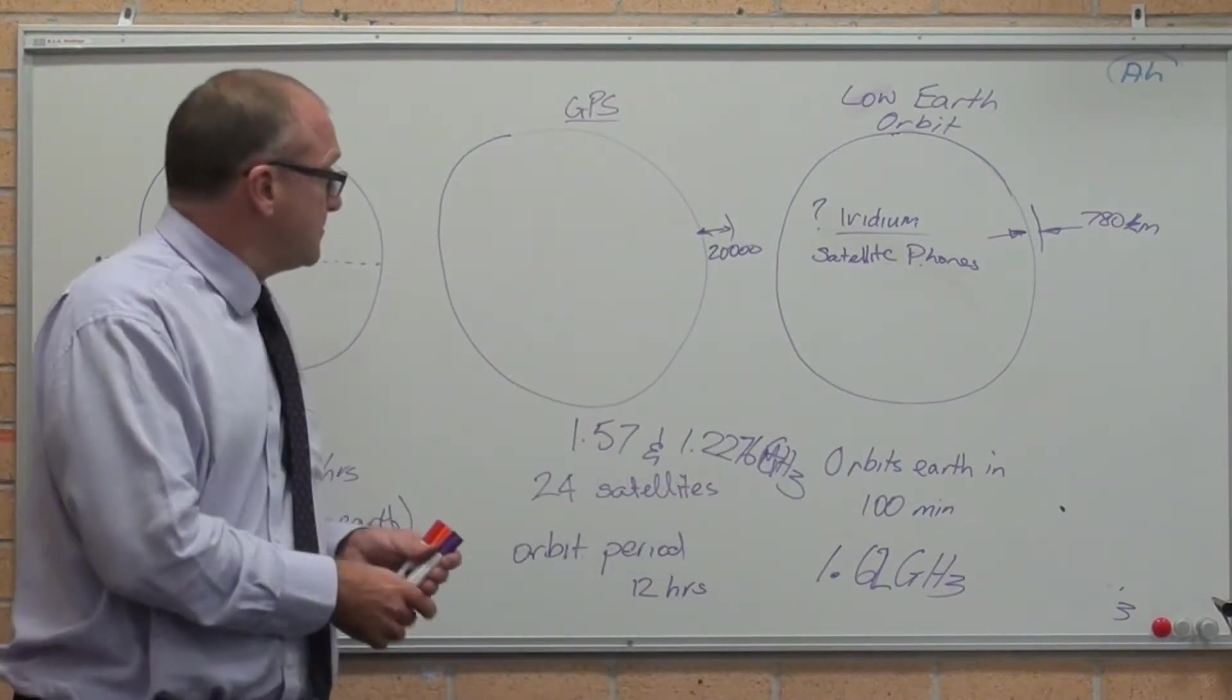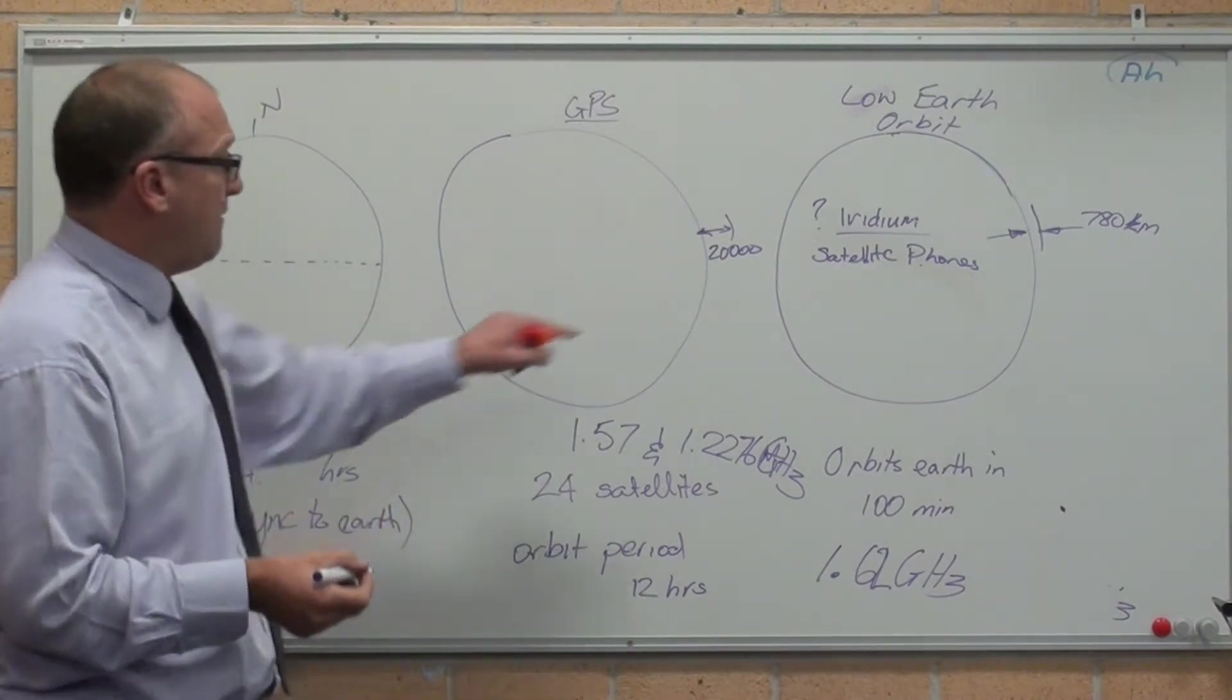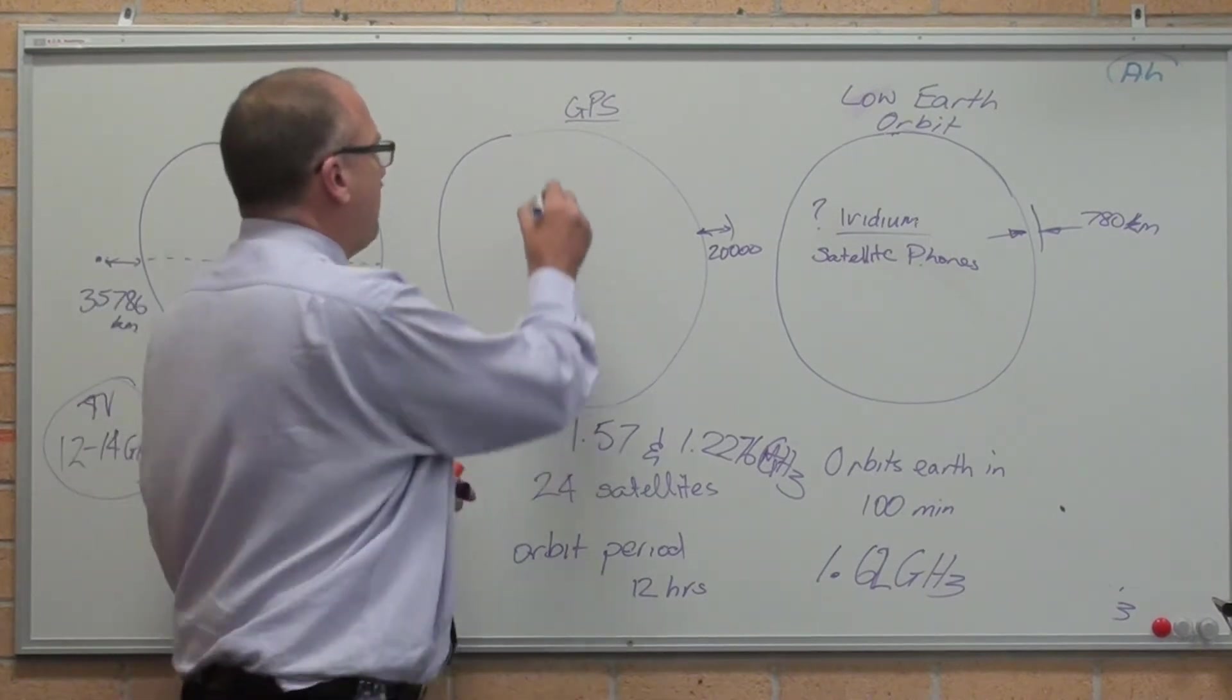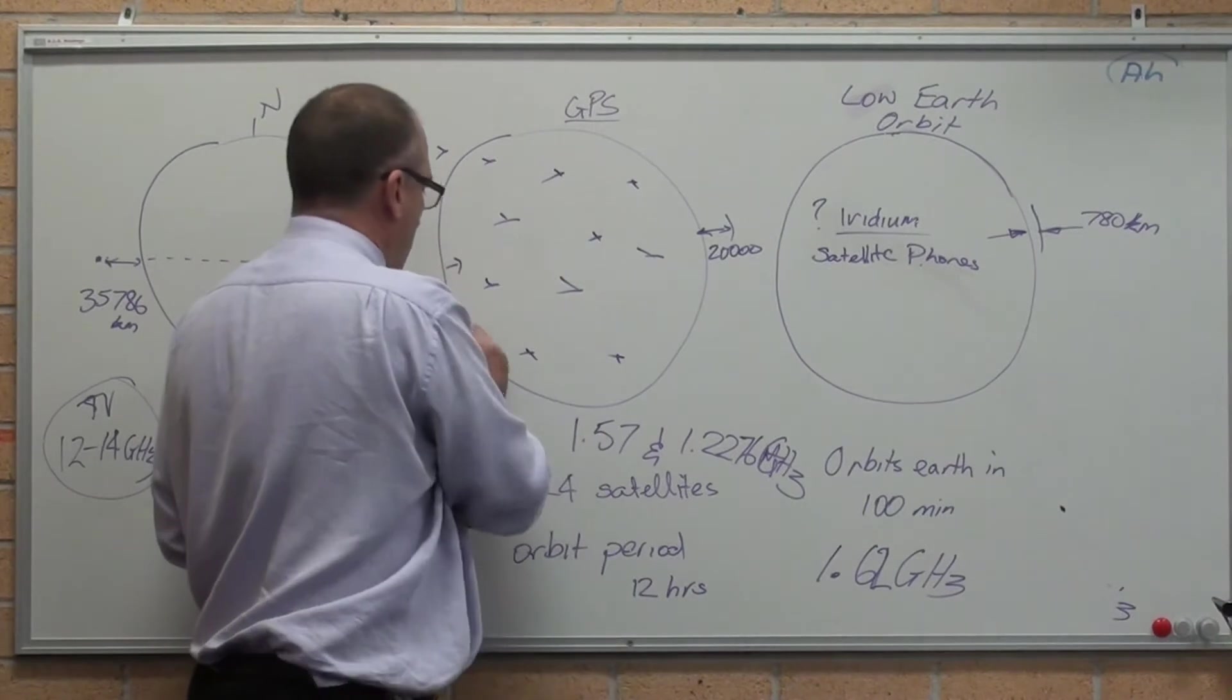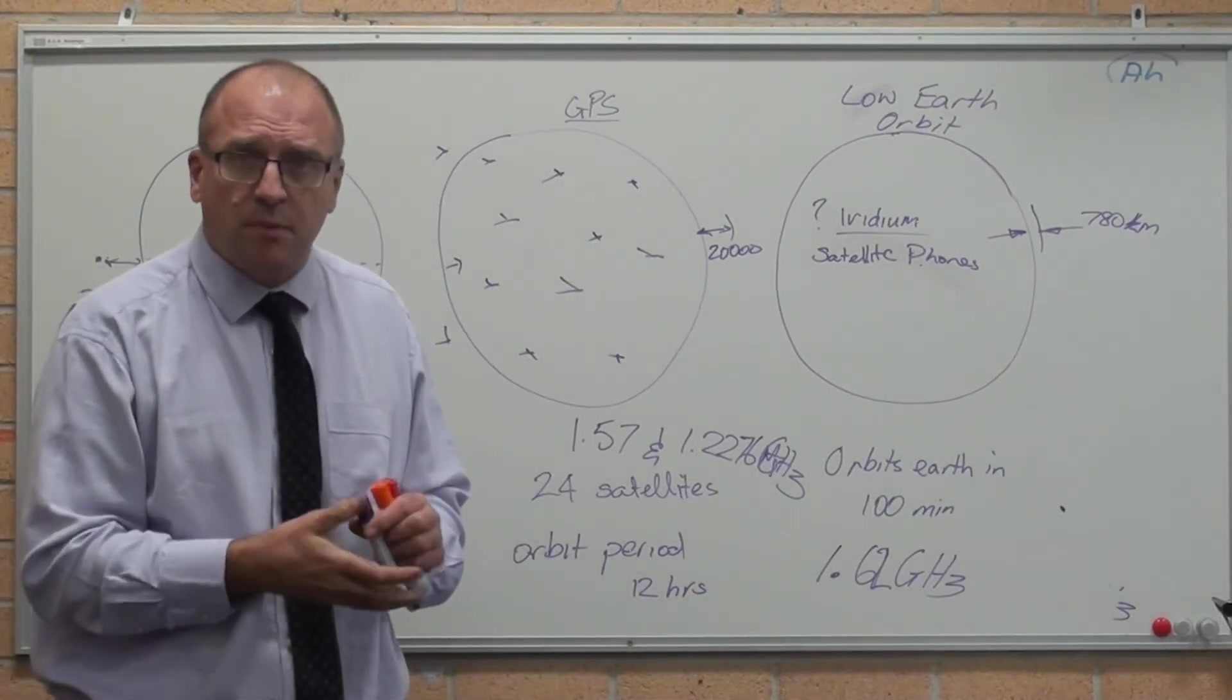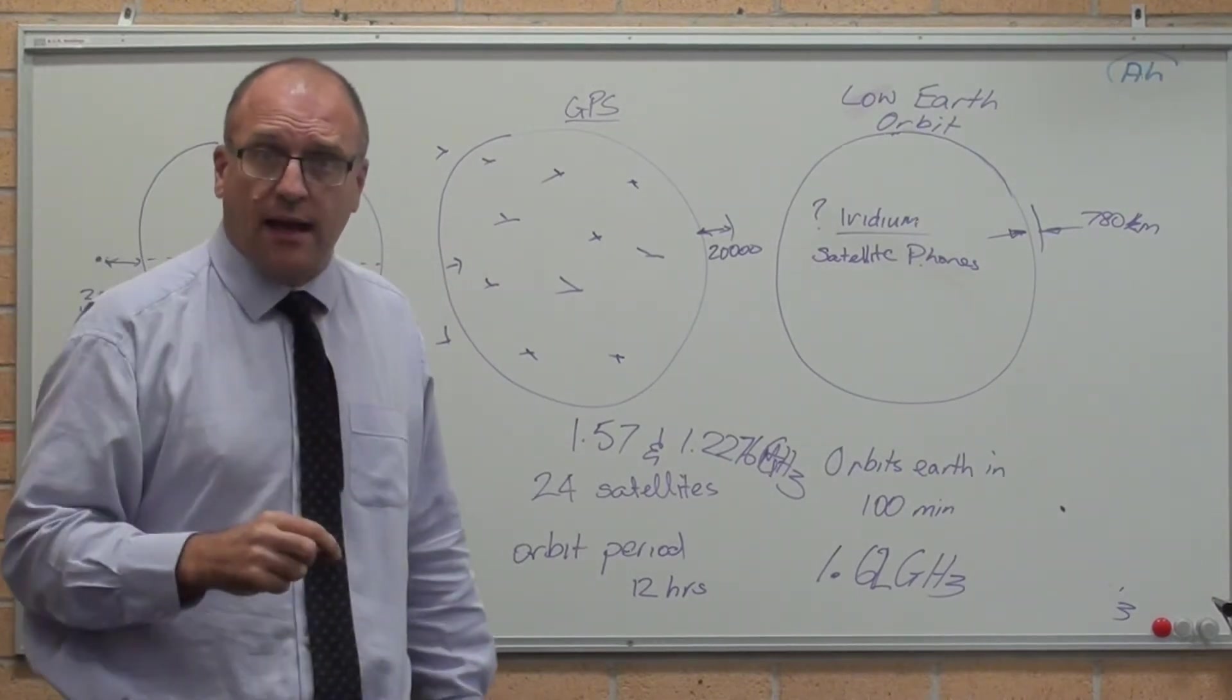GPS. There are 24 satellites above the Earth. They are 20,000 kilometres up. There's 24 of them in random, not random. The US military know exactly where they are to the nearest probably 5 centimetres, 20,000 kilometres up. They know exactly where they are.